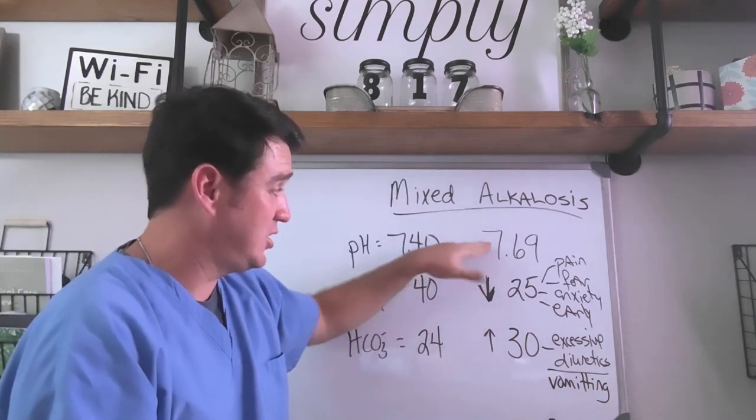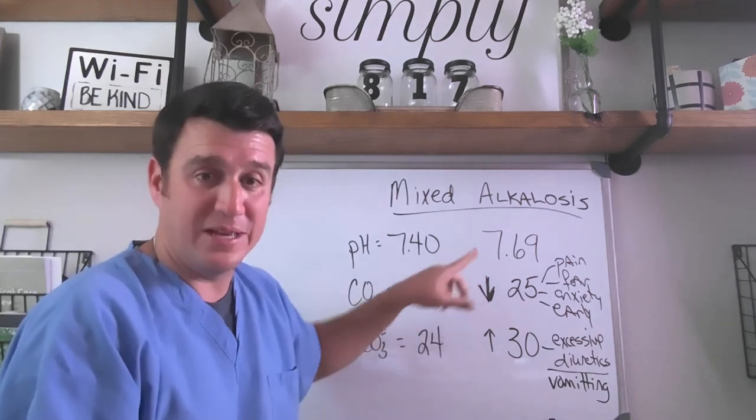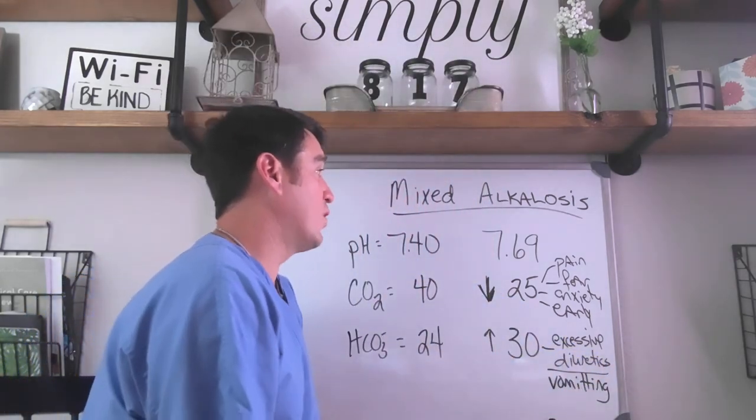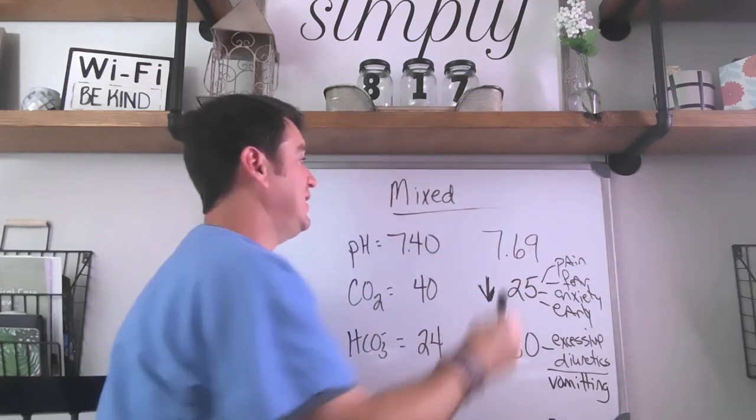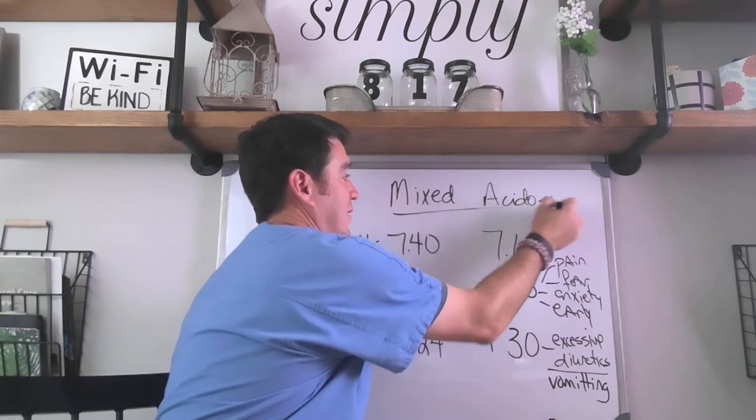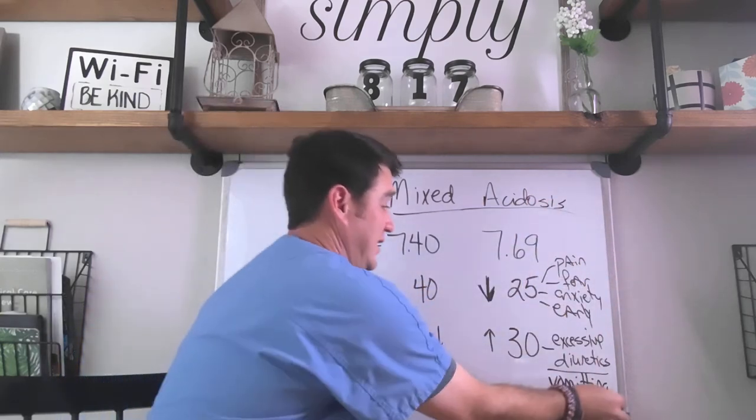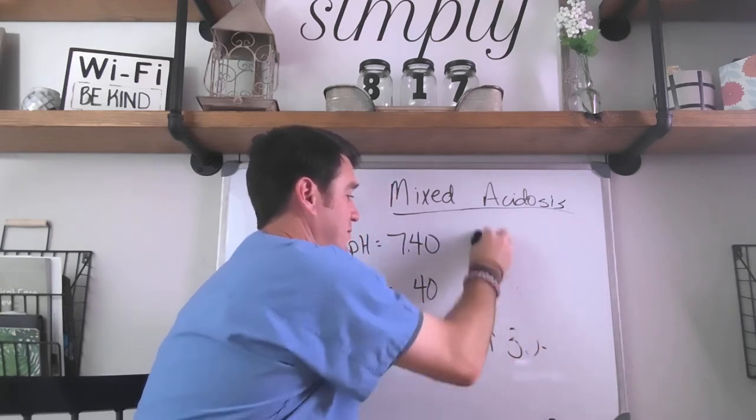Alkalotic pH, decreased carbon dioxide, increased bicarbonate levels, mixed alkalosis. Now, we're just going to change up here one word, and we're going to turn this alkalosis into acidosis.